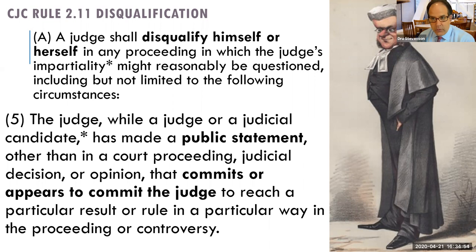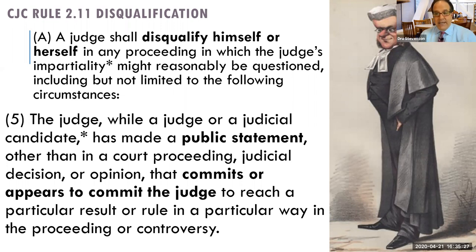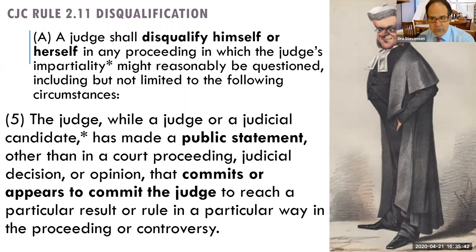A5 is somewhat different: this is where the judge has made public statements that commit or appear to commit the judge to reach a particular result or rule in a particular way in a controversy. For example, when running for judicial office, if you take a strong stand saying you adamantly oppose abortion, that you're very strongly pro-life, and that you would always rule against Planned Parenthood no matter what the case or facts were — that's the type of thing where you've just disqualified yourself. You have to recuse yourself from that case.